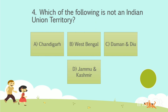Which of the following is not an Indian Union Territory? Option A: Chandigarh. Option B: West Bengal. Option C: Daman and Diu. Option D: Jammu and Kashmir. Your time starts now. The answer is Option B, West Bengal. Shall we go to the next question?